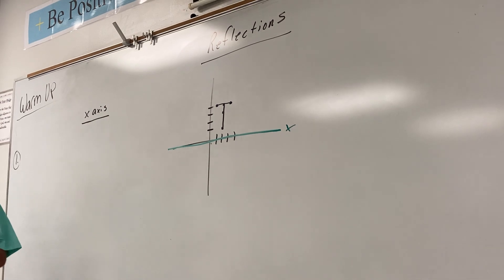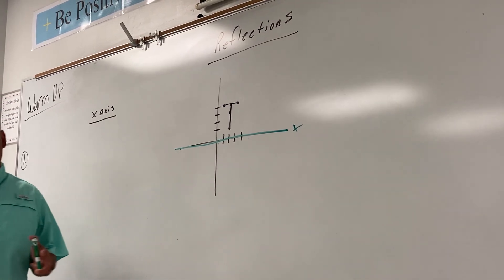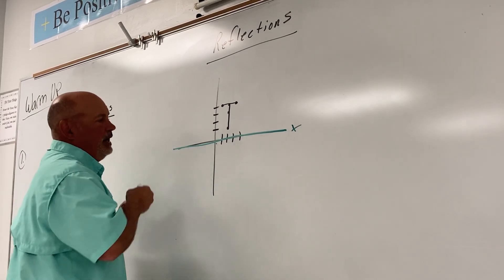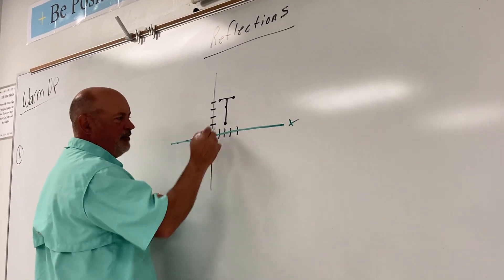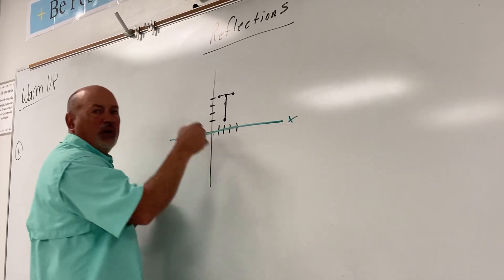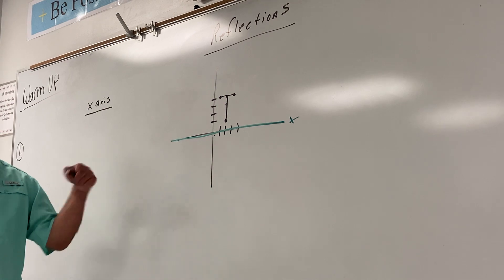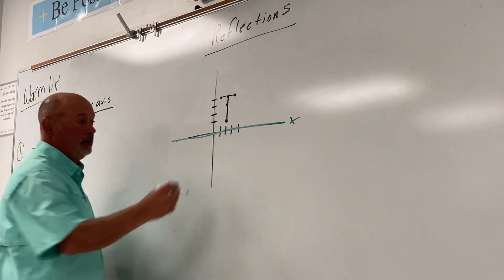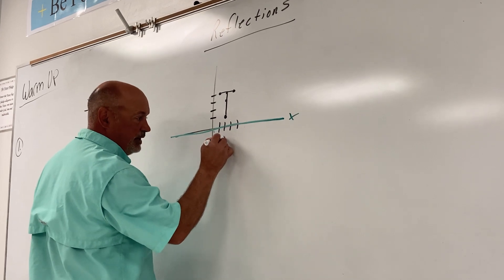Now we are counting to the x-axis, not the y-axis. Let's start with this point right here — how far is it from the x-axis? It's one above. Where do I need to go? One below. If it's above, the next one's going to be below — you have to go opposite. So one above goes right here to one below.